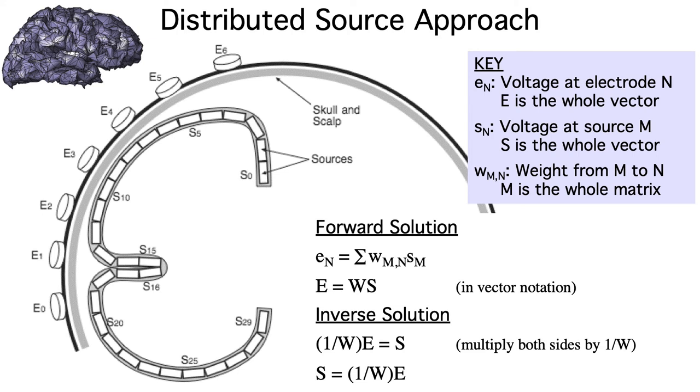We now have everything we need to solve the inverse problem. We have E, the vector of observed voltages, and we have W, the matrix of weights. We can just multiply E by the inverse of W to get the activation level for each patch of cortex. This is done separately for each time point.